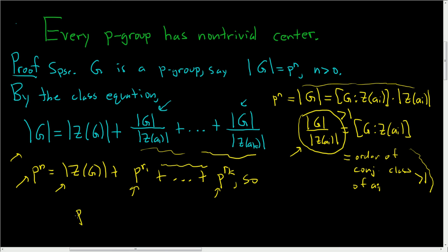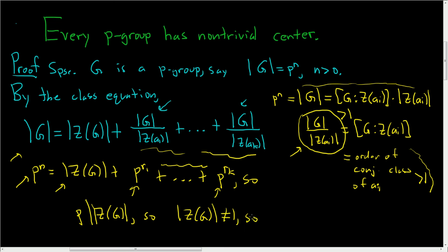We have a prime number dividing the order of the center of our group. That means the order of the center is not equal to 1; in particular, it's bigger than 1. So the center is non-trivial.